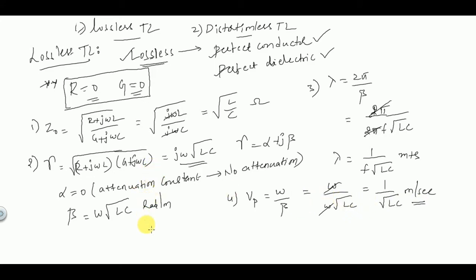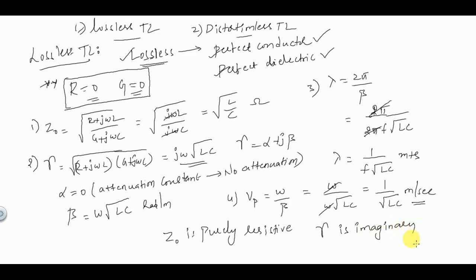To summarize for the lossless transmission line: Z0 is purely resistive in nature and the propagation constant gamma is imaginary. The condition for a lossless transmission line is R = 0 and G = 0, achieved by having a perfect conductor and perfect dielectric inside the transmission line.